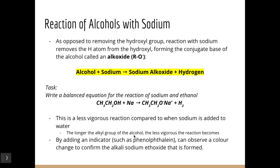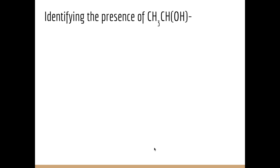The longer the alcohol chain, the less vigorous the reaction becomes. By adding an indicator such as phenolphthalein, we can observe a colour change to confirm the alkali sodium ethoxide that is formed. The ethoxide can accept a hydrogen, therefore it can act as an alkali — accepting protons — and that's what we could observe with an indicator.